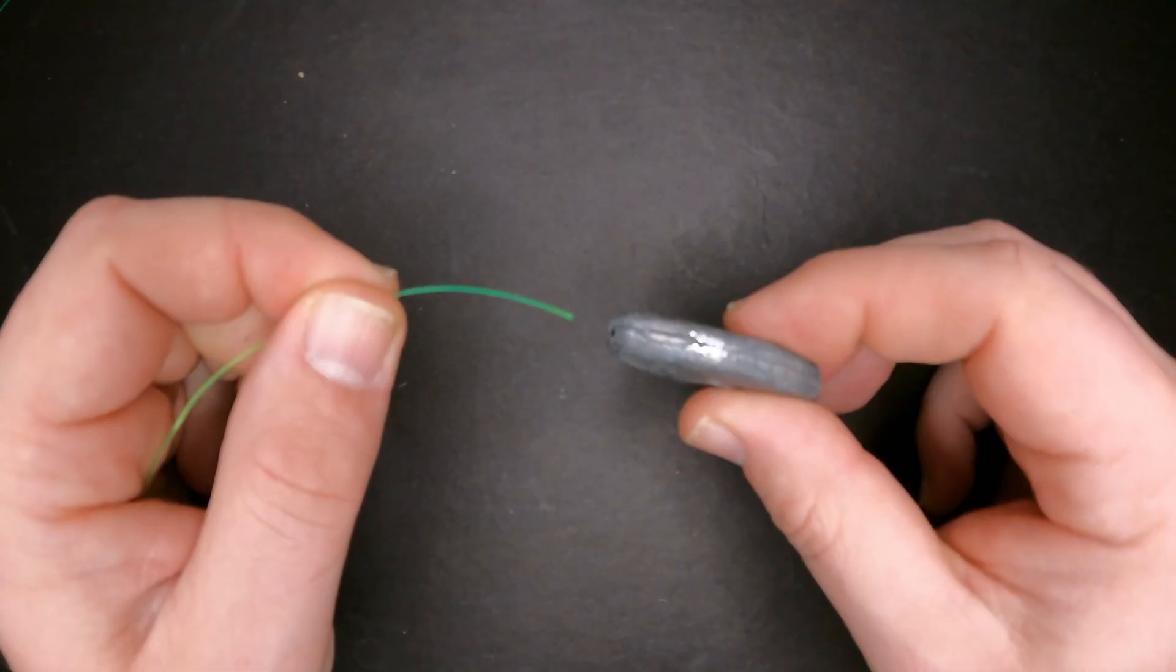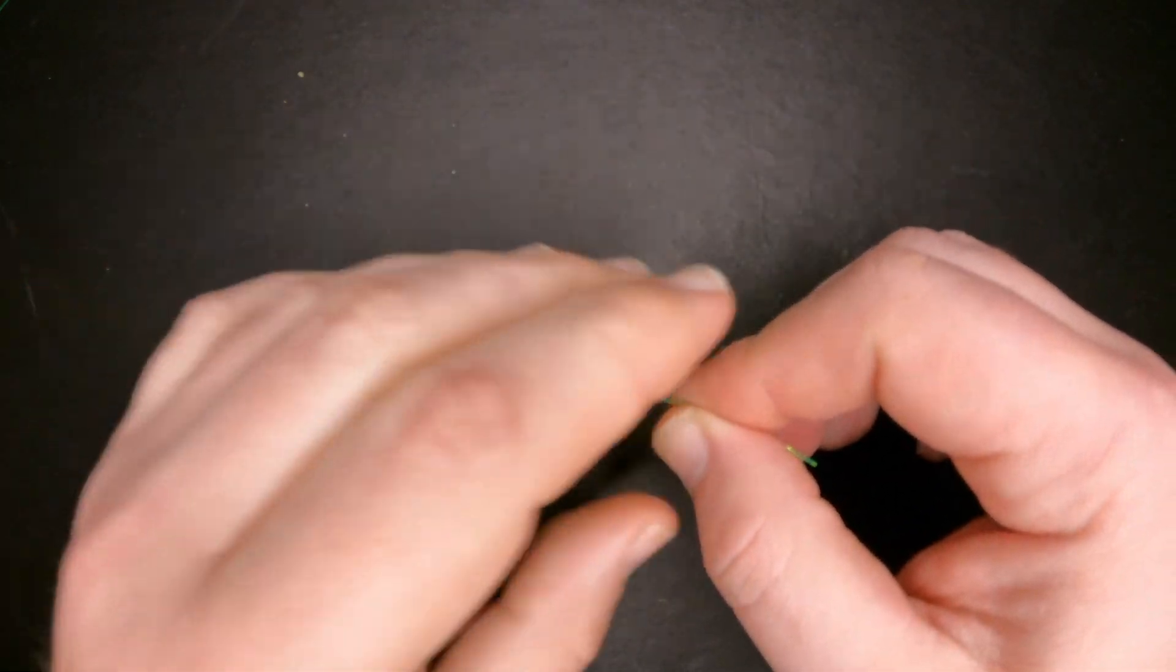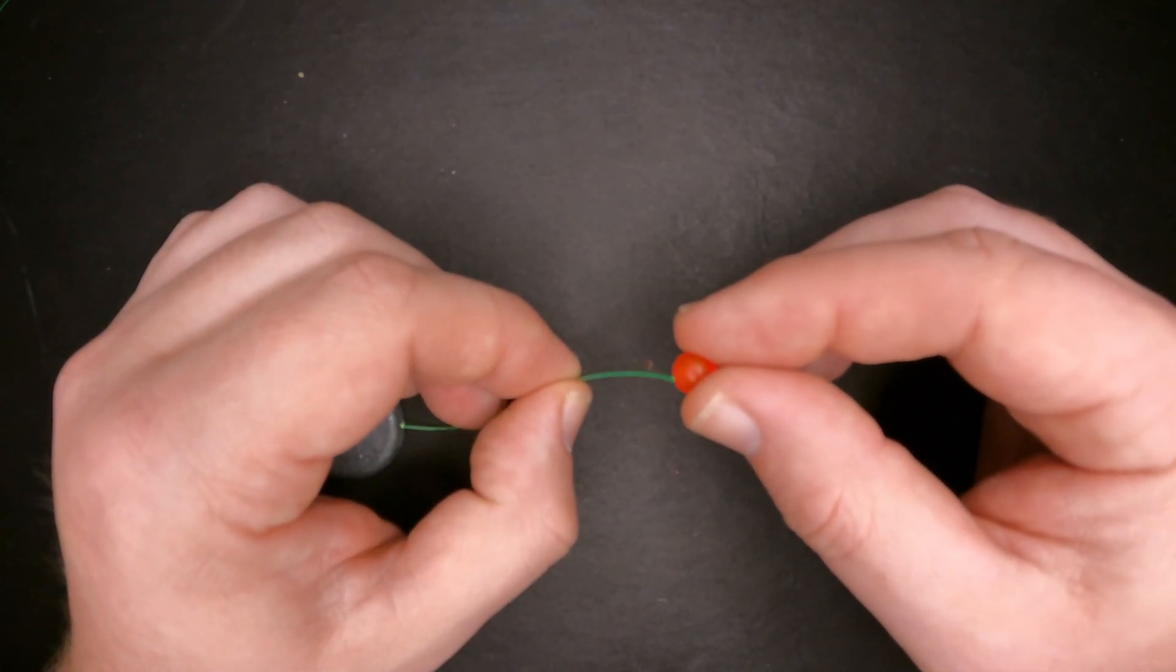Now let's move on to the main line. First I'm going to slide on a no-roll sinker. Then I'm going to follow that up with a plastic bead. This can also be glass.